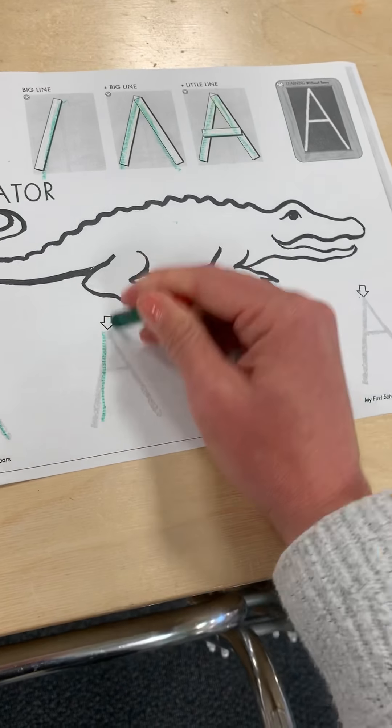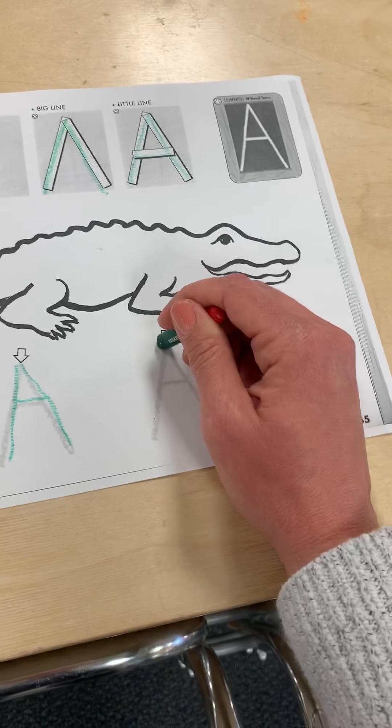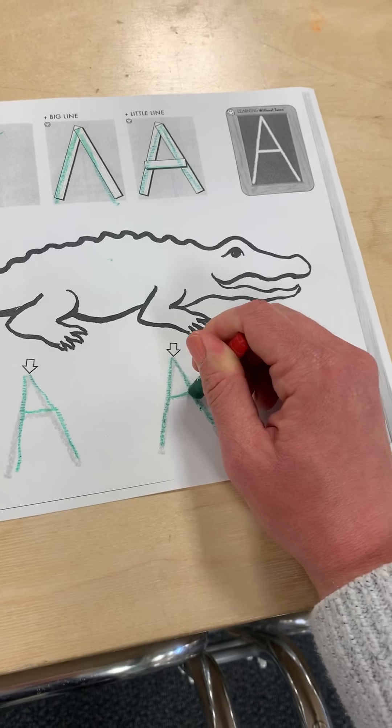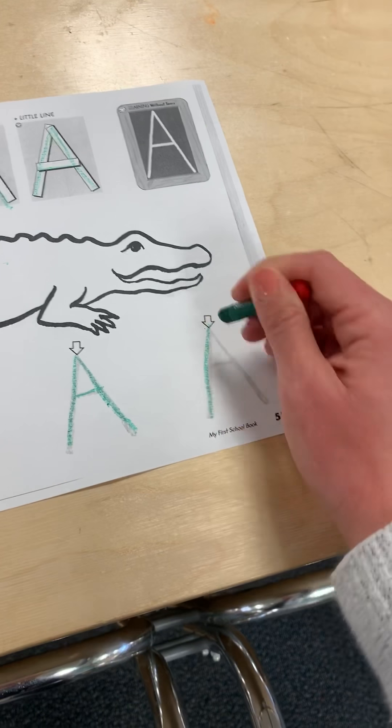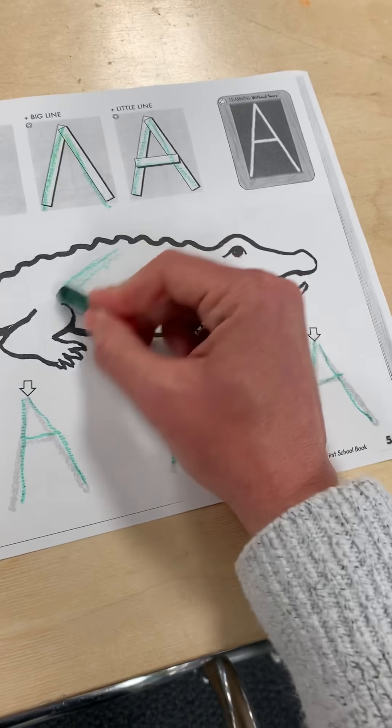Big line down, big line down, little line across. Big line down, big line down, little line across. Big line down, big line down, little line across. And then you get to color.